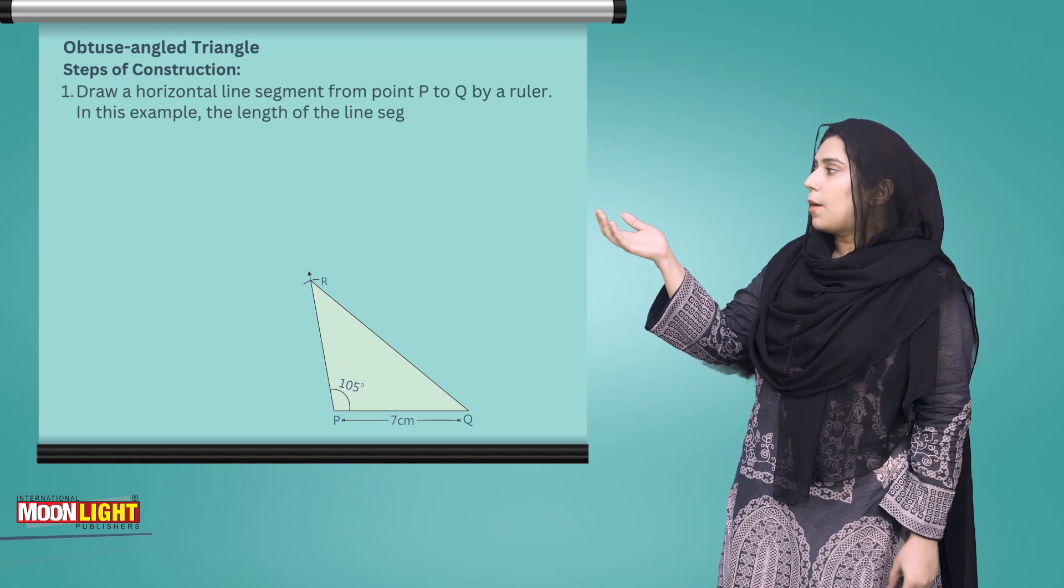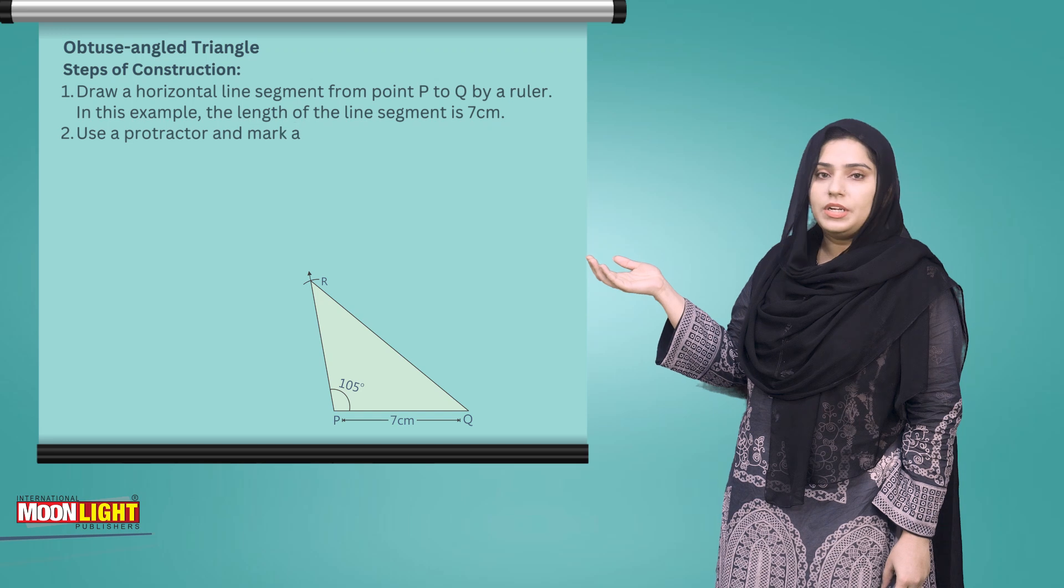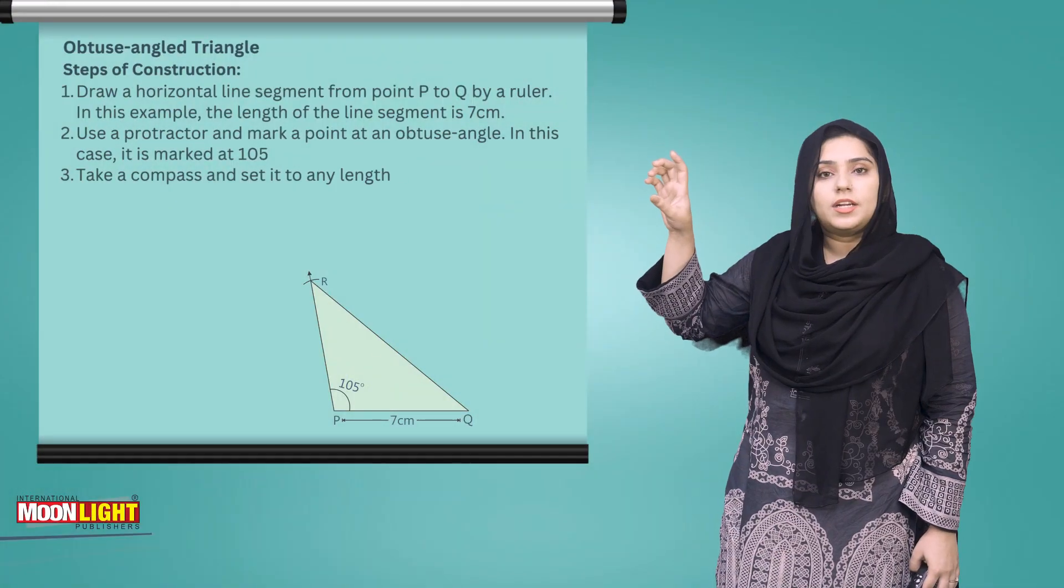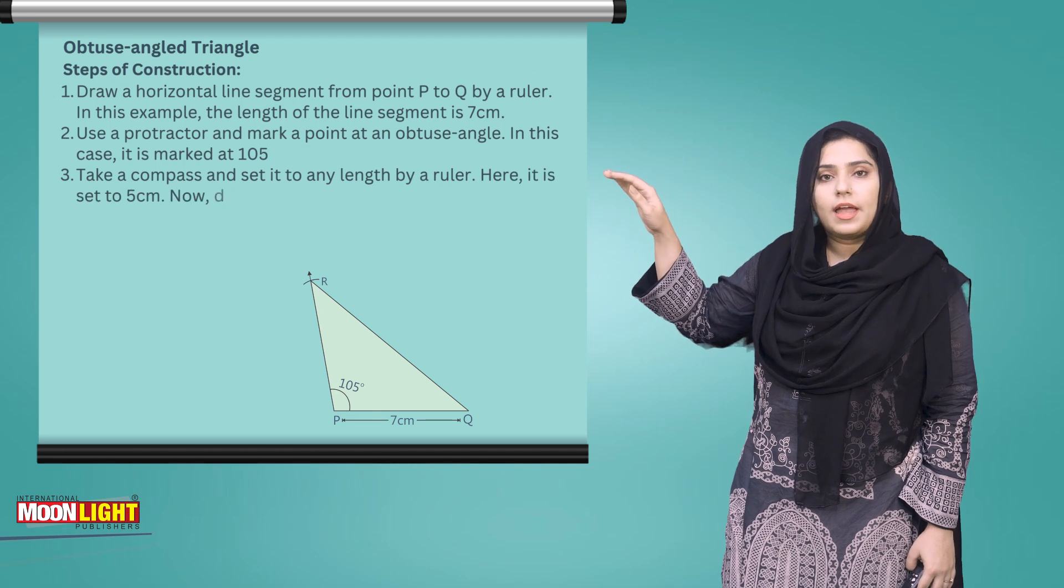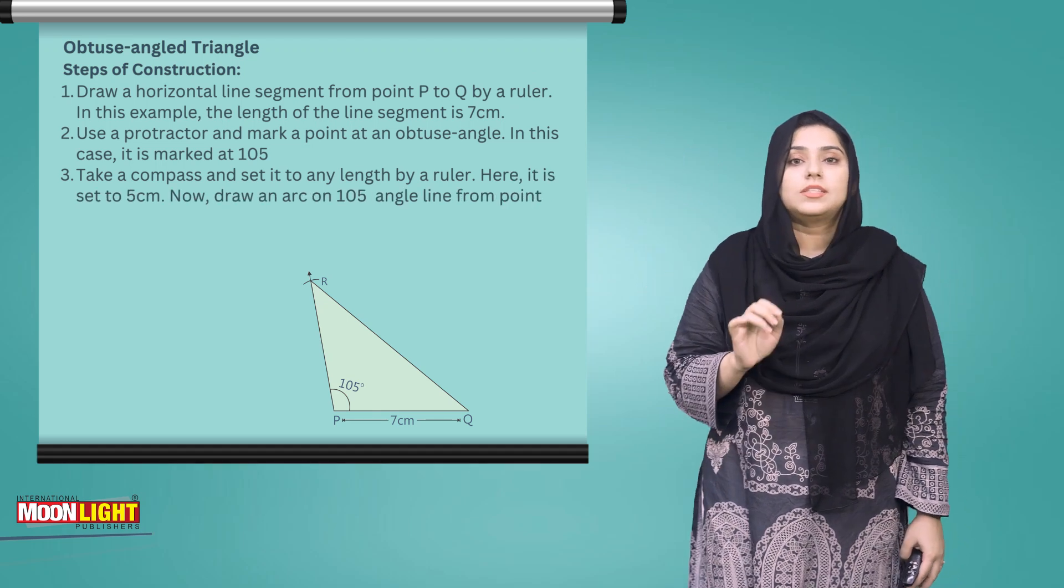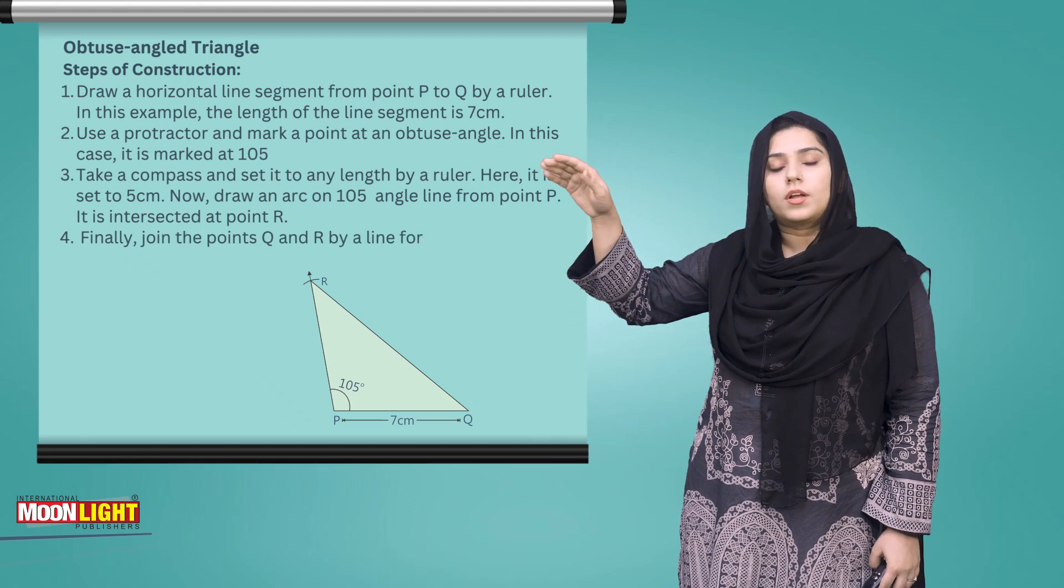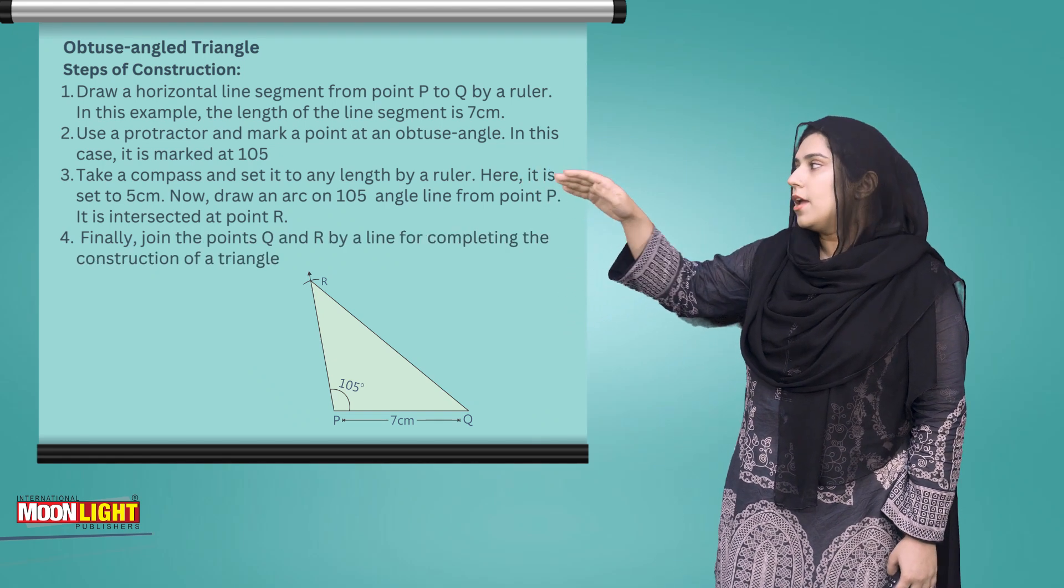For example, they have given you that PQ is 7 cm, and at P the angle is 105 degrees. Draw angle P at 105 degrees, then from P again draw a 7 cm arc. We will mark where the arc intersects and draw from R to that point.